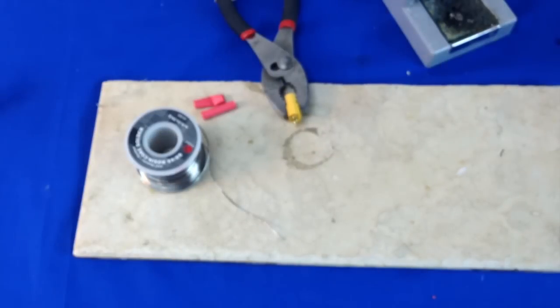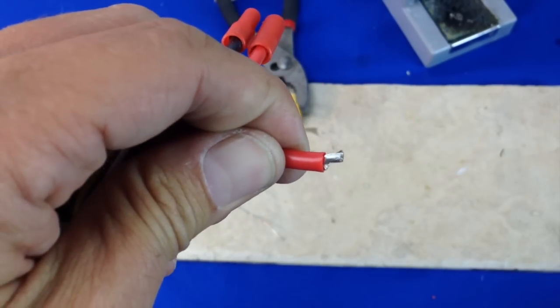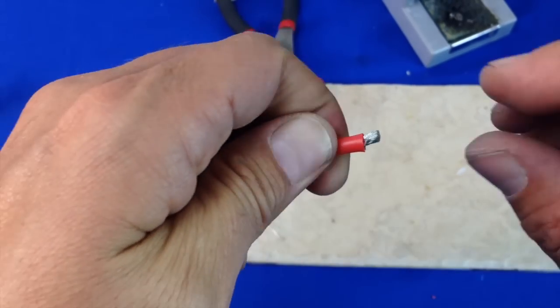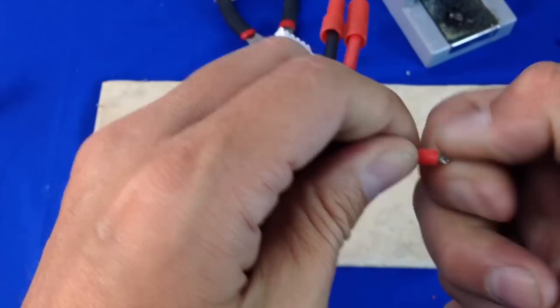I'll cut this off camera here, and what that leaves is about that much wire, which is really pretty cool. We're going to twist that and we'll get that tinned up.